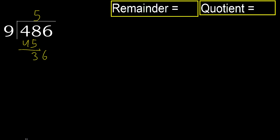Next. 36. 9 multiplied by 4. 36 is not greater. Okay. Subtract. 36 minus 36 is 0.